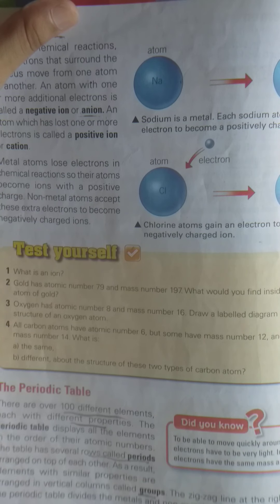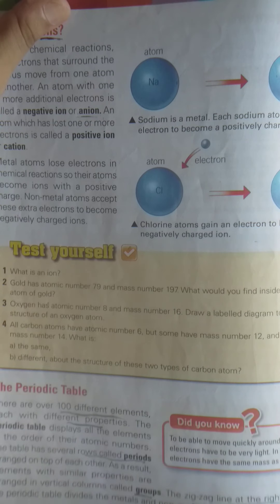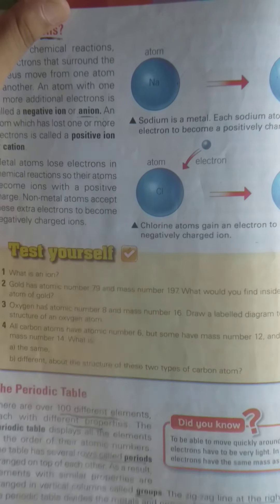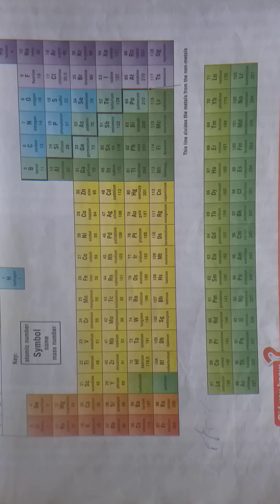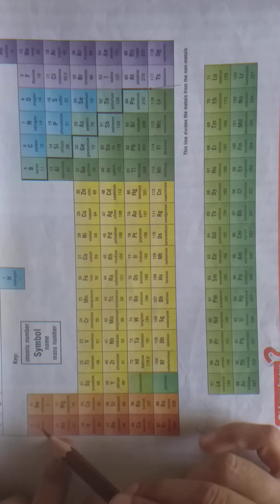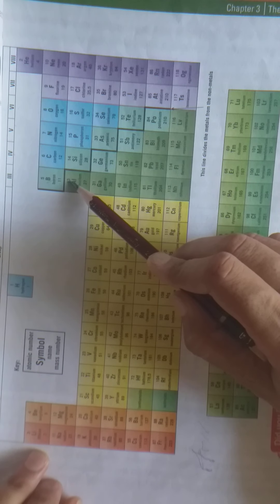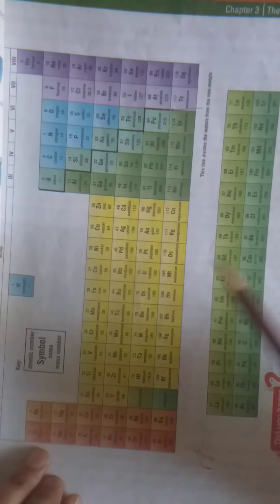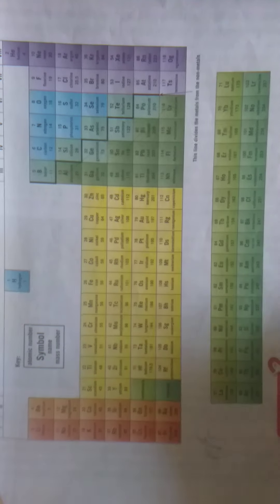Elements with similar properties are arranged in vertical columns which we call groups. There is a zigzag line on the right-hand side of the periodic table which divides it into metals and non-metals. Now look at this — this is a periodic table.